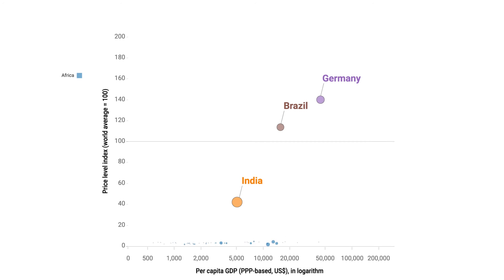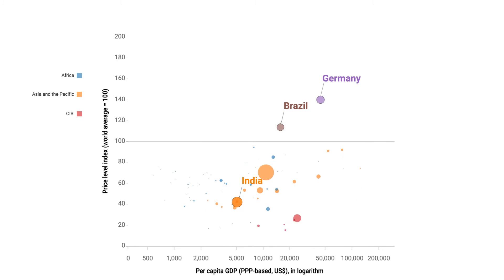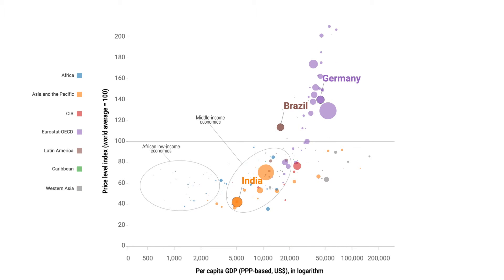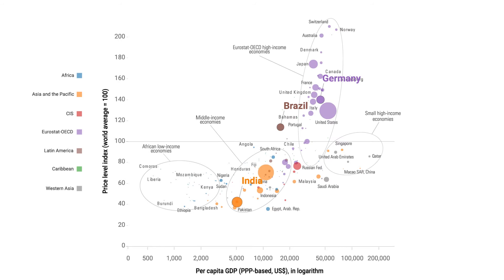This chart summarizes the relationship between price levels and gross domestic product, or GDP, per capita of economies in the world, while also showing the respective size of each economy, based on the results from the 2011 International Comparison Programme, or ICP. Let's see how it's constructed.